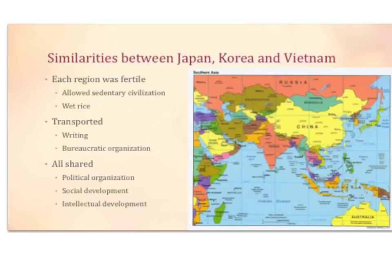This slide ends the lecture on China's influence. Let's look at some similarities between Japan, Korea, and Vietnam. Each region was fertile, which allowed sedentary civilization — sedentary means to stay in one place. They focused on wet rice crops, transported writing and bureaucratic organization, and all shared political organization, social development, and intellectual development. The purpose of this lecture is to show you how influential China was in the East Asian area during the period from early history up until around the 19th century. The next lecture is on the Mongols.